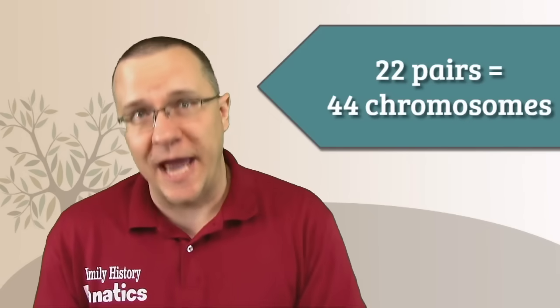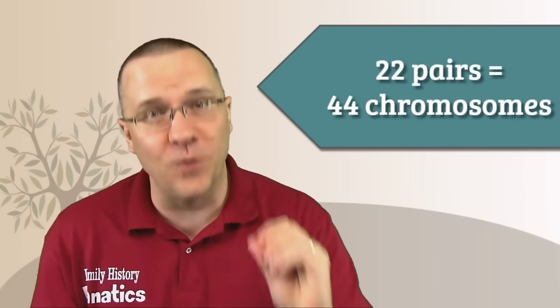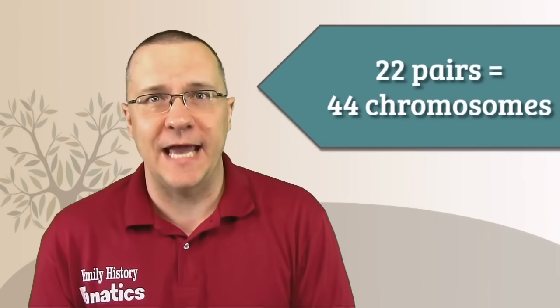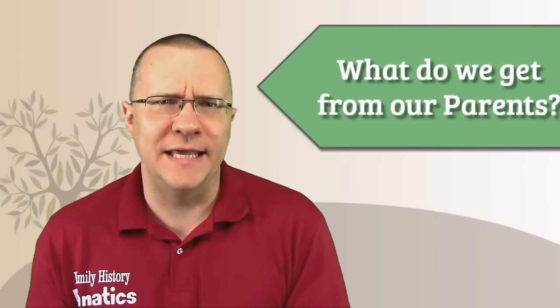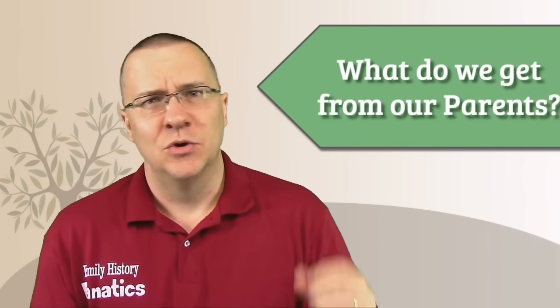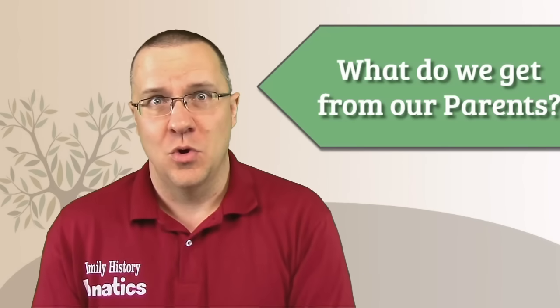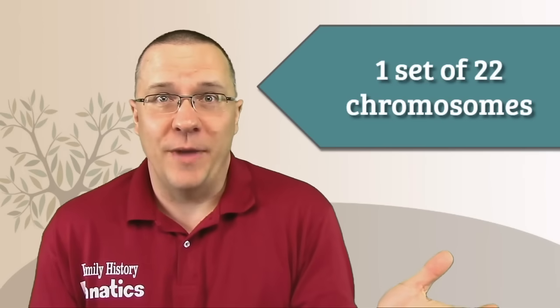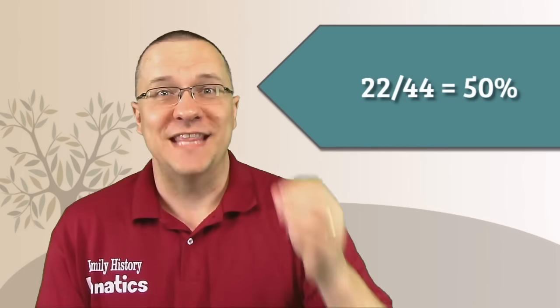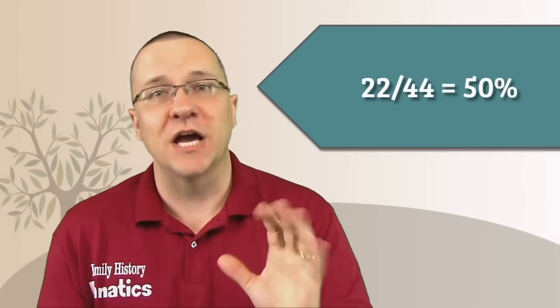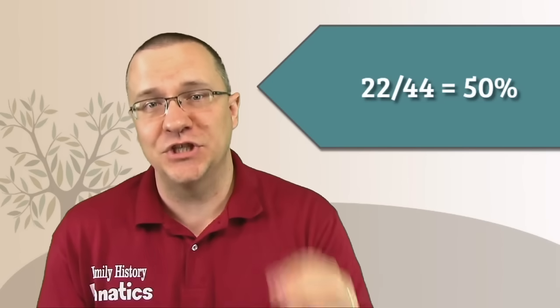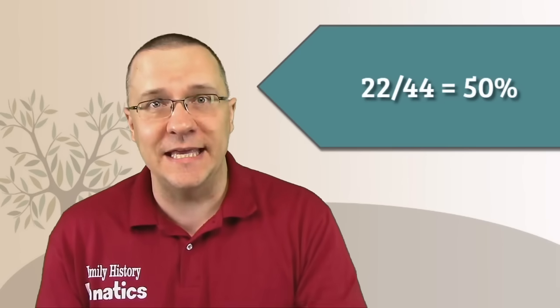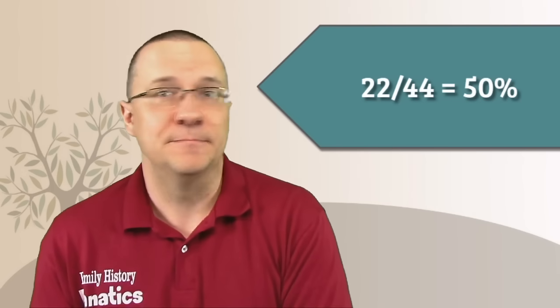Now since there are 22 pairs of chromosomes, that means there are 44 total chromosomes that we're concerned with today. So when it comes to our parents' DNA, what do we get from each one of our parents? Well this is actually a really easy question to answer. We get one set of chromosomes from each parent, and that means we get 22 chromosomes from each parent. So in order to do the math, you just have 22 divided by 44. That equals 50 percent. When we're talking about autosomal DNA, you always get 50 percent of your DNA from each of your two biological parents. Simple as that.